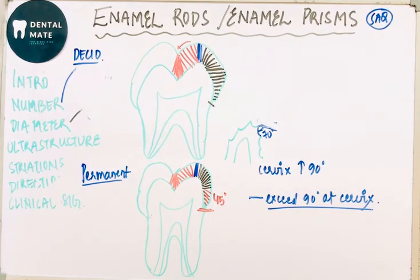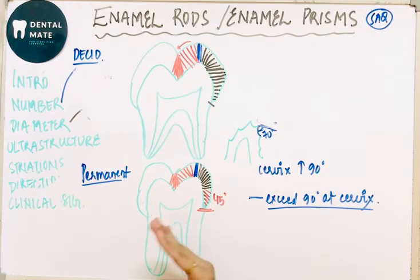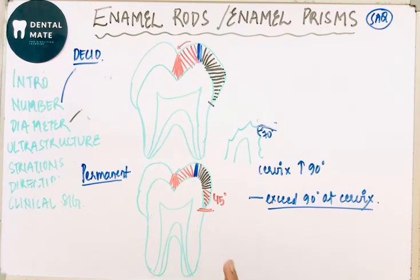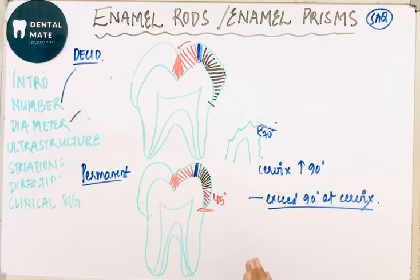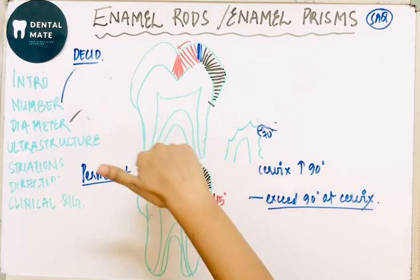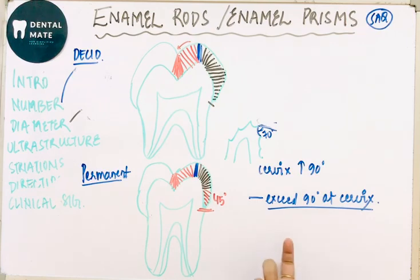Regarding the clinical significance of enamel rod direction — a bevel of 45 degrees is given to remove unsupported enamel rods during cavity preparation. Additionally, the change in direction of enamel rods is a functional adaptation to minimize the risk of cleavage in the axial direction under occlusal masticatory forces.